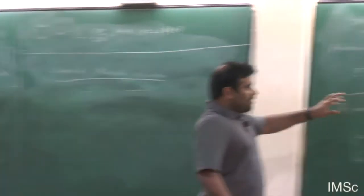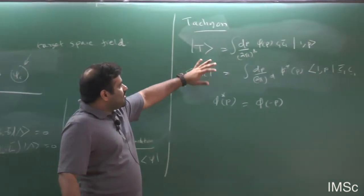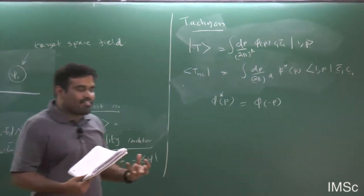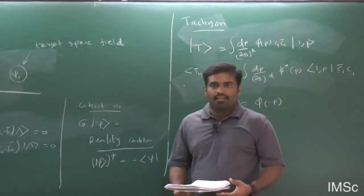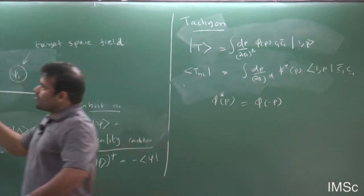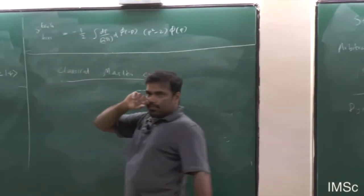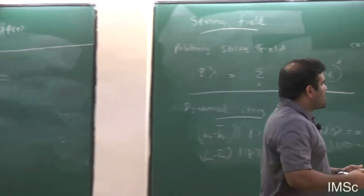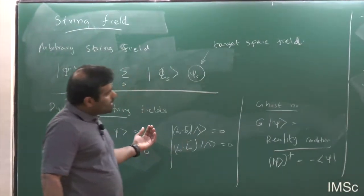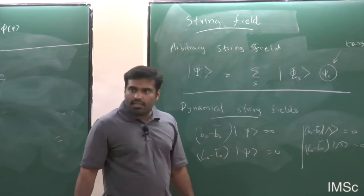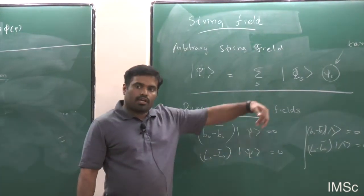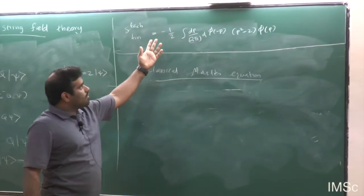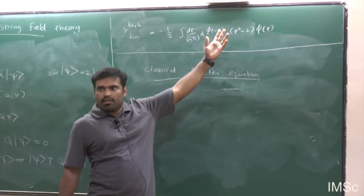For the tachyon field, the kinetic term works out to be −(1/2) ∫ (dP/(2π)^D) φ(−P)(P² − 2)φ(P). This is the simple kinetic term you usually see in a usual quantum field theory. If instead of the tachyon you consider the graviton field, you can reproduce the kinetic term you see in general relativity.